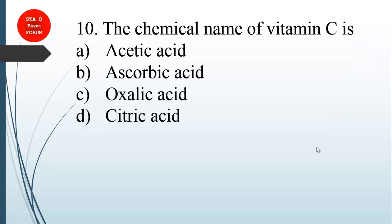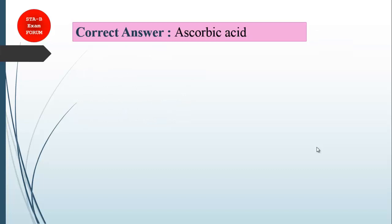The chemical name of vitamin C is? We will use elimination method. Citric acids are found in citrus fruits like mangoes and oranges. Oxalic acid is generally found in ant stings - if you have been bitten, you have an itching sensation because of oxalic acid. The correct option is ascorbic acid - the chemical name of vitamin C is ascorbic acid. Option A, acetic acid, is generally found in vinegar.